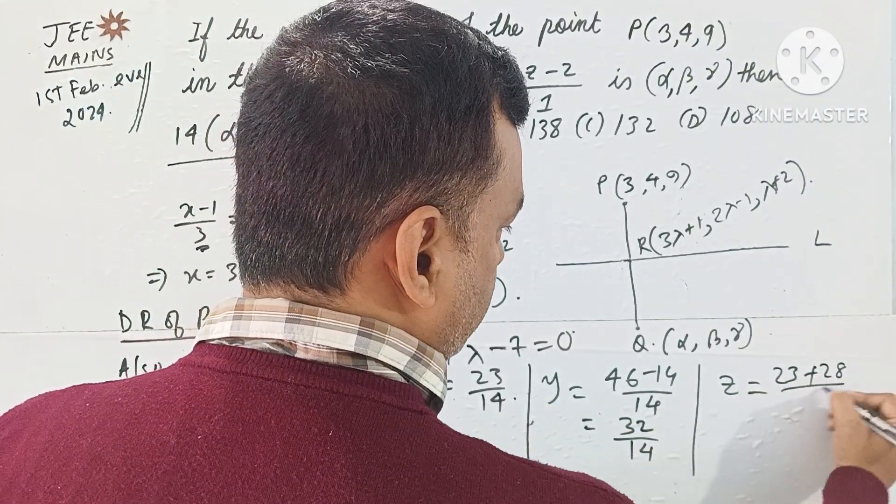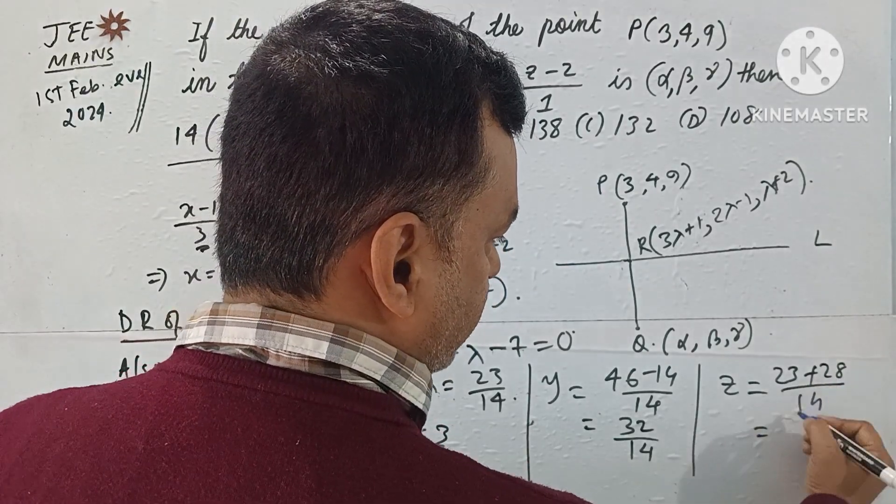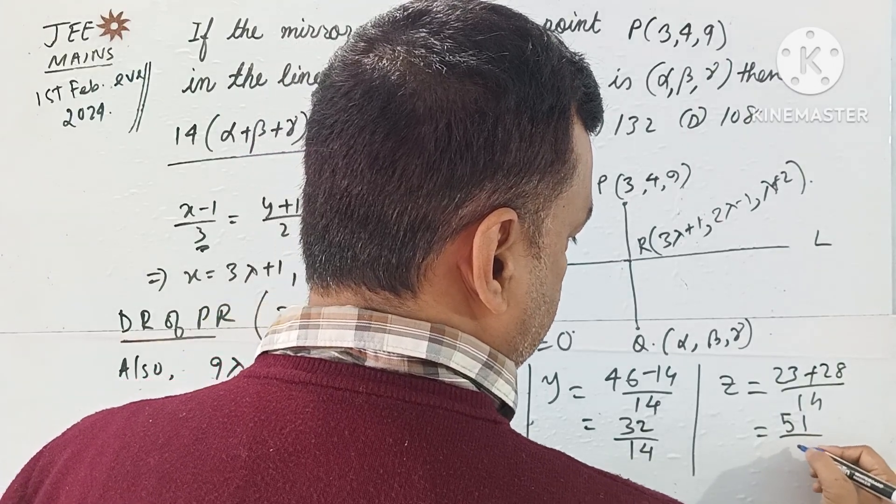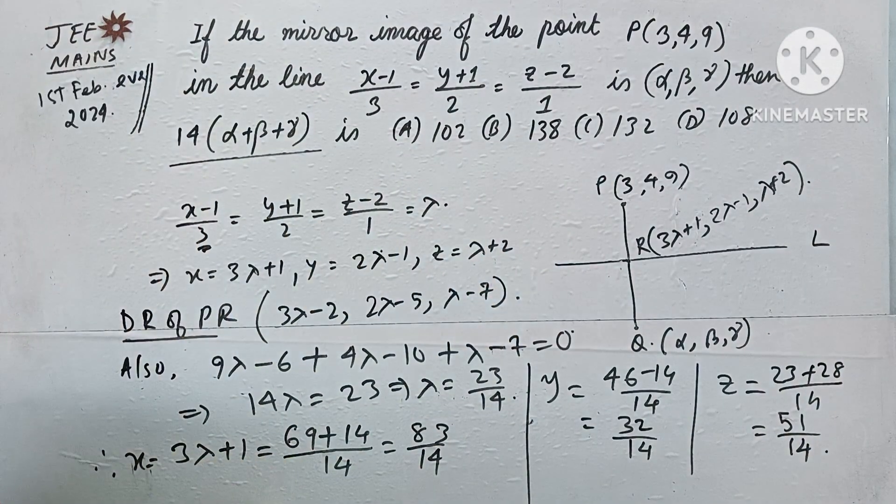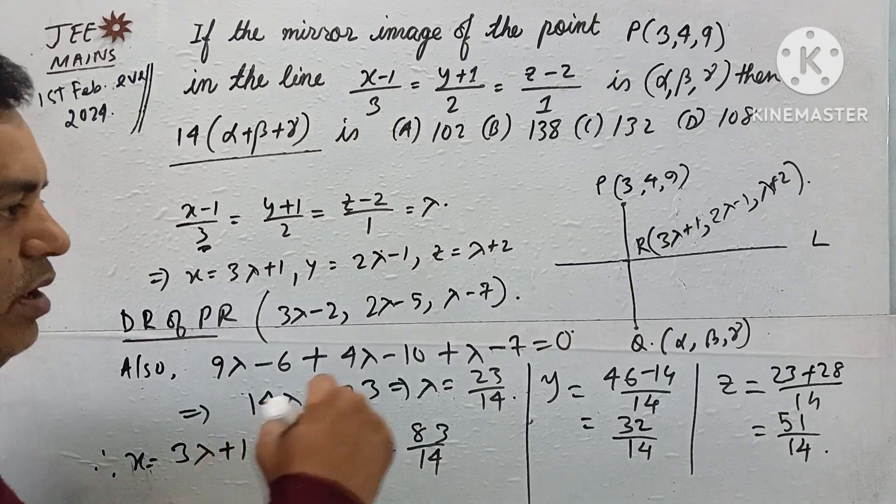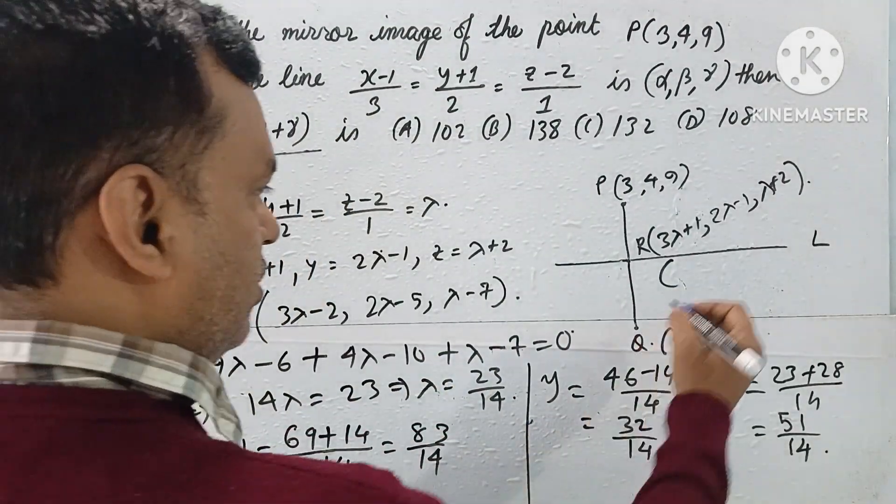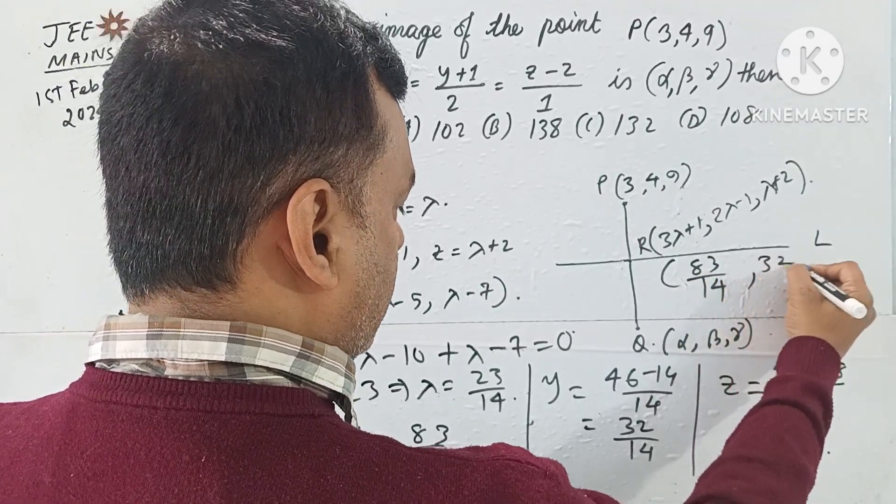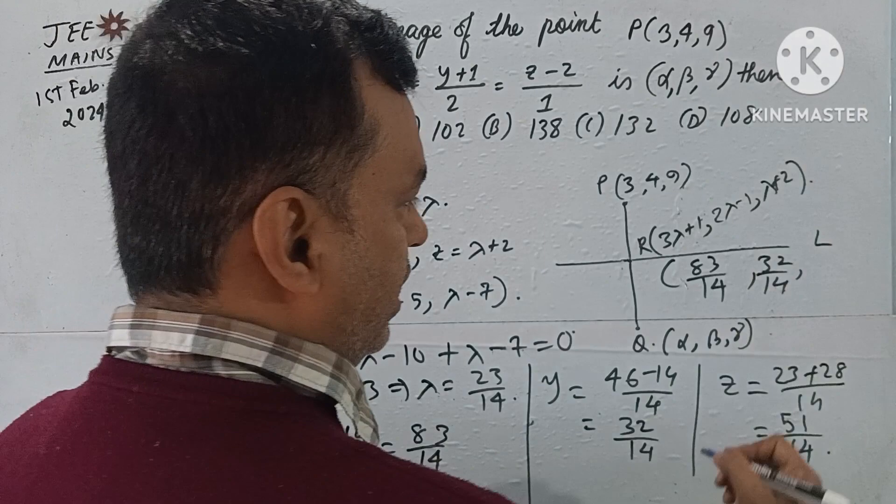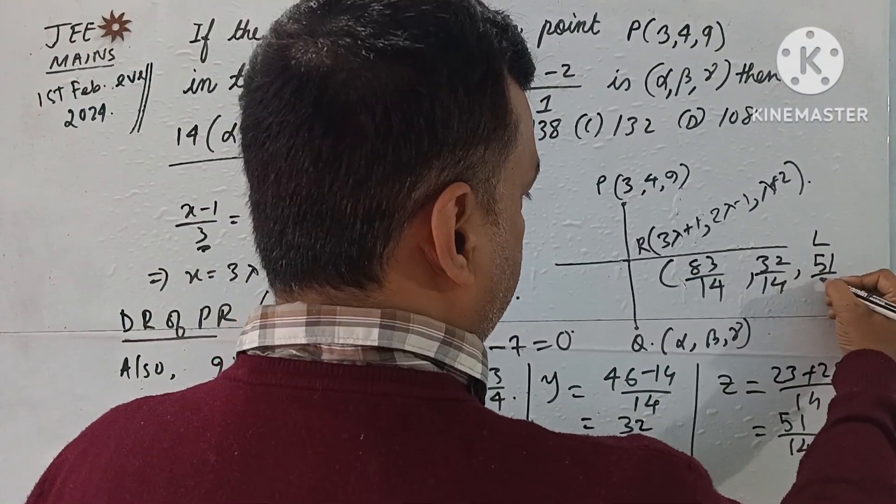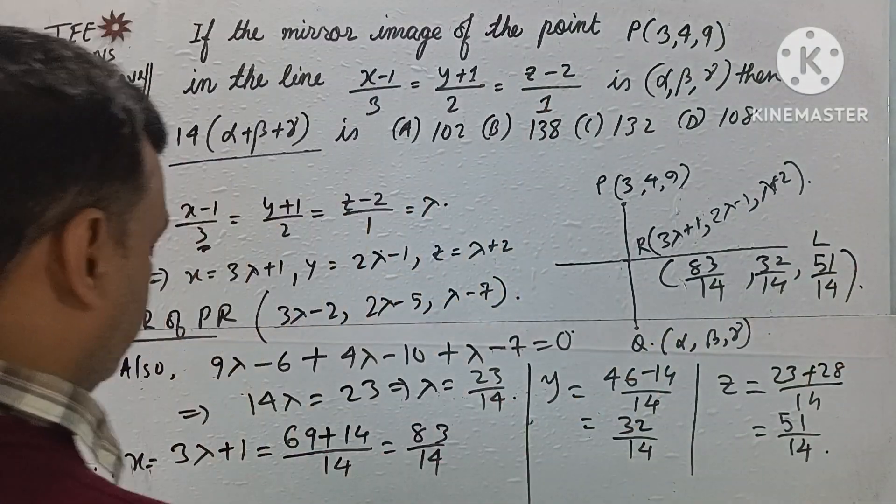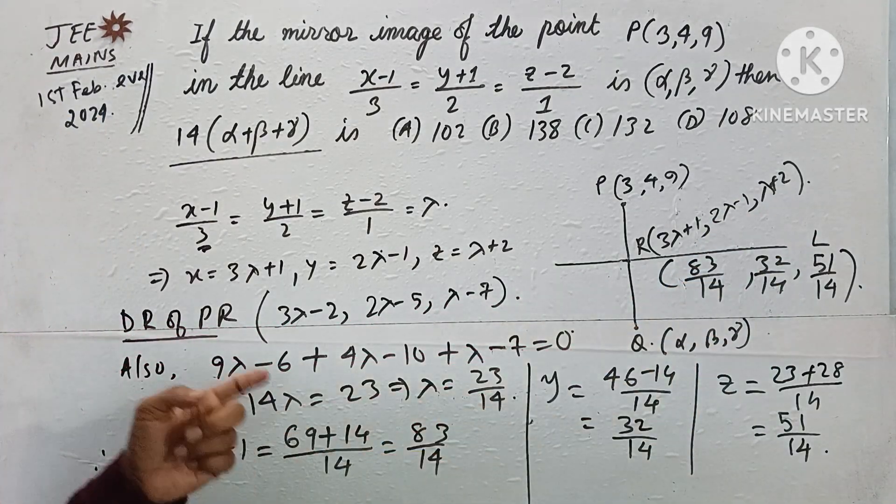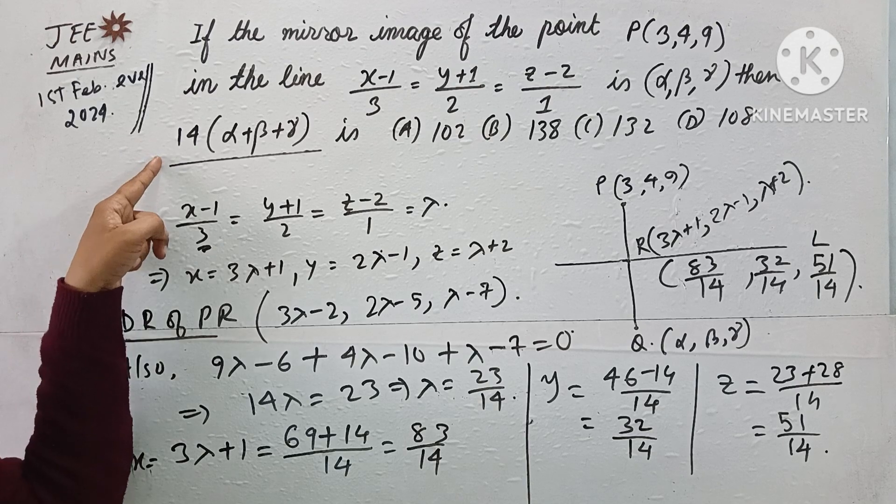z = λ+2 = 23/14 + 28/14 = 51/14. So R's coordinate is (83/14, 32/14, 51/14). We're not canceling 14 because it appears in the question formula.